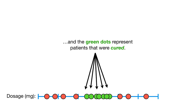Going back to the original one-dimensional data, you may be wondering why we decided to create y-axis coordinates with dosage squared — why not dosage cubed, or some other transformation? In order to make the mathematics possible, support vector machines use something called kernel functions to systematically find support vector classifiers in higher dimensions.